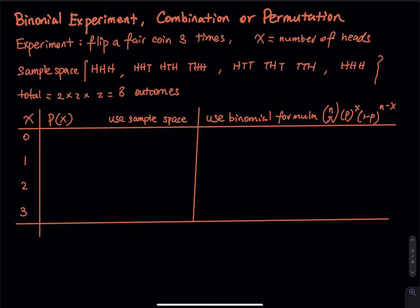My experiment is simple. I flip a fair coin three times, and I let x be the number of heads. Based on what we studied in the past, we can set up the sample space. I start with three heads, then change the last head to a tail, and move the T to the left one step at a time. That gives three distinct outcomes. Then I change the last two heads to two tails and move the H to the right one step at a time. The last outcome — that's a typo — should be tail, tail, tail.